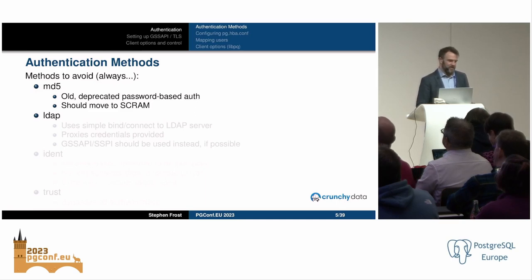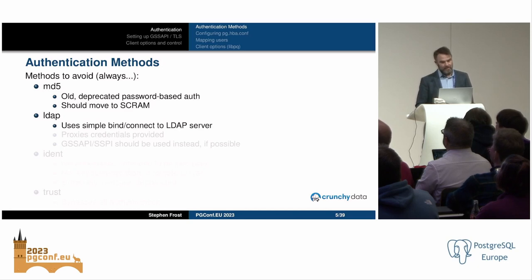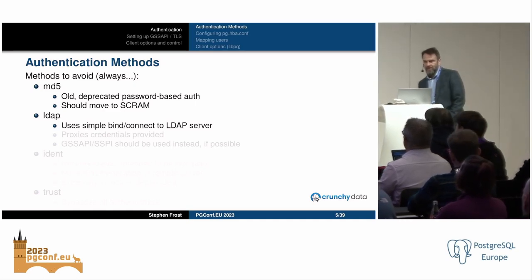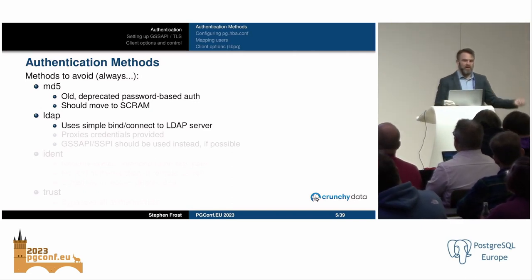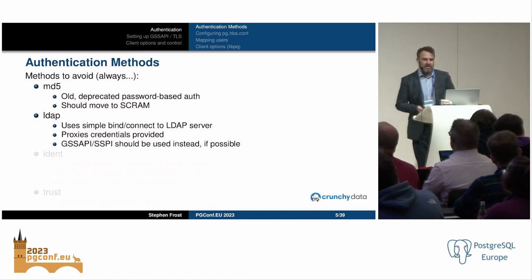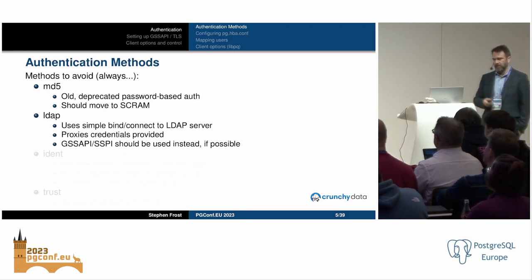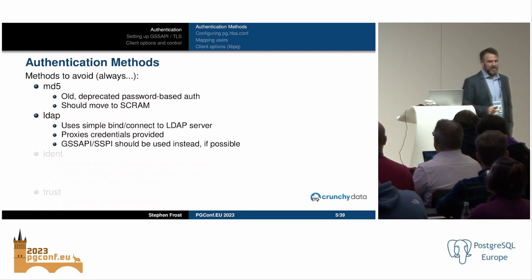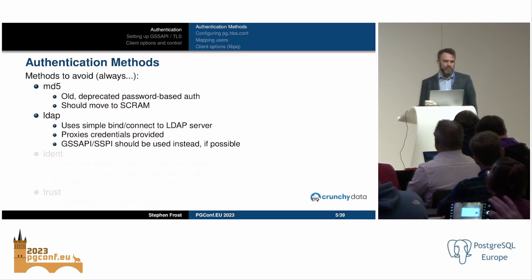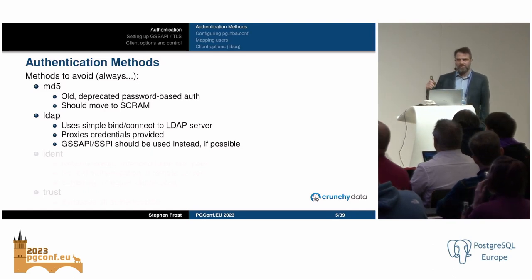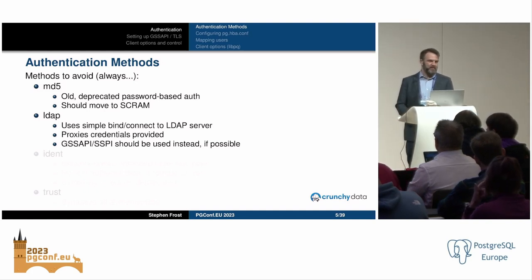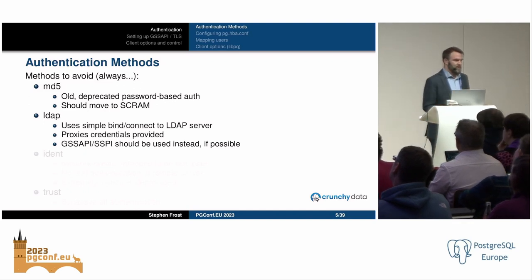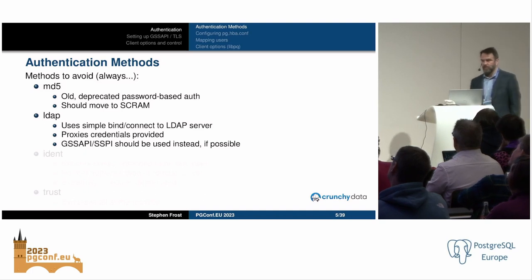LDAP is used by many people but I don't like it. It uses a simple bind connect to the LDAP server, and the user's password is sent to the Postgres server, which then proxies those credentials to authenticate to the LDAP server. You should just use GSS API instead, or SSPI on Windows. Almost always this is because someone has it in their head that LDAP is how you authenticate with Active Directory — it's possible, but it's not how Windows does it, not how more secure environments do it. The Postgres server has no need to ever see the user's password — that doesn't happen with SCRAM, GSS API, or SSPI.